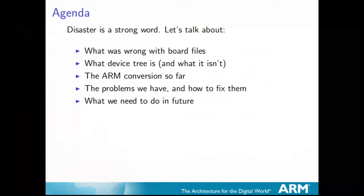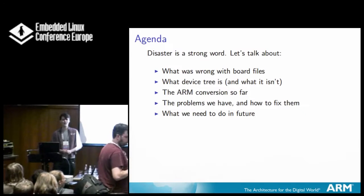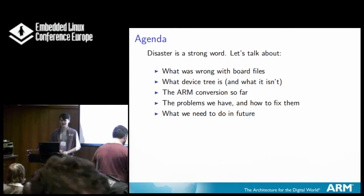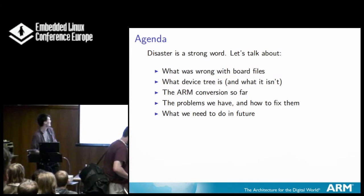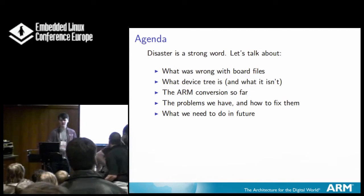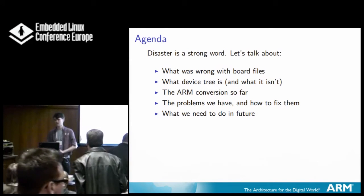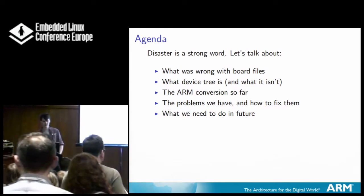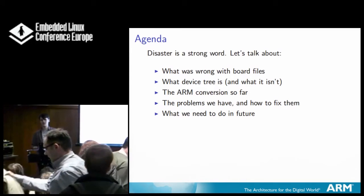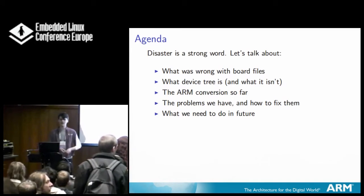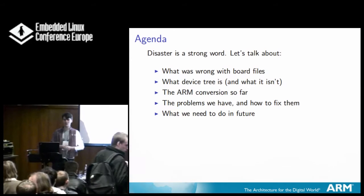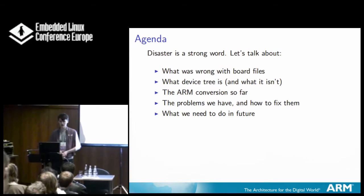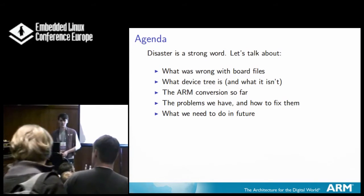"Disaster" is obviously a bit of a strong word, but it evidently has managed to inspire quite a few of you to come along, so that ploy has worked. These are the things I want to talk about: why we moved to device tree in the first place, what was wrong with board files, what we actually mean by device tree, what it actually is, how it differs, what we converted so far, what's gone wrong, how we can fix what's gone wrong, and how we can prevent more things from going wrong in the future.